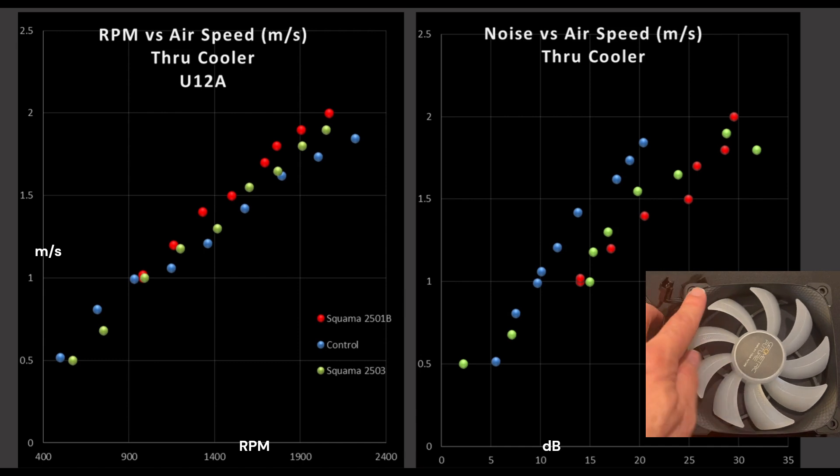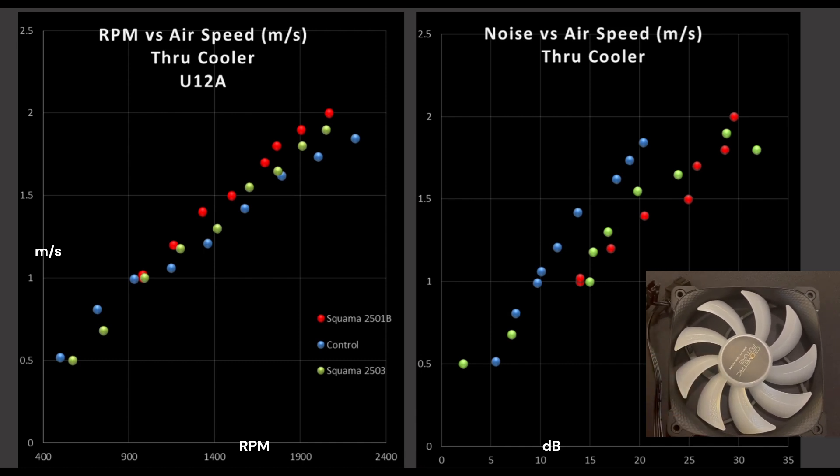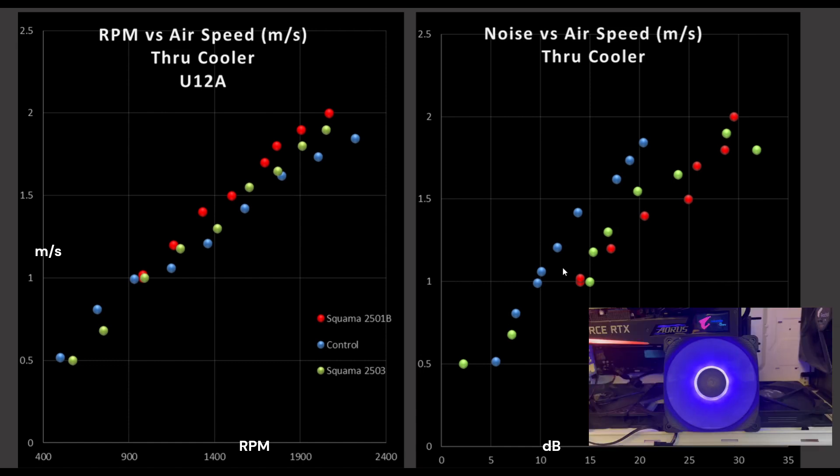So this is an efficiency graph in terms of how much noise does it generate for that given airspeed. And well, this is where they're not doing so good. They are pretty noisy, especially compared to this control fan. So do you like the way they look? Do you like the way they look enough to counteract how much noise they generate? That is an answer that you have to decide for yourself.